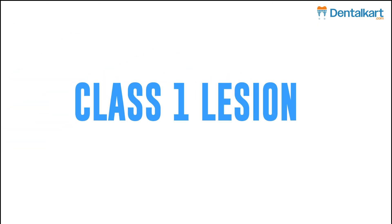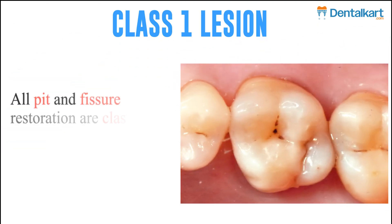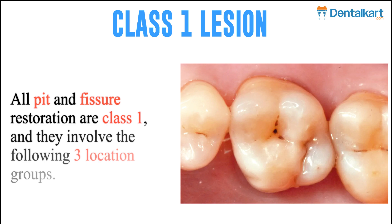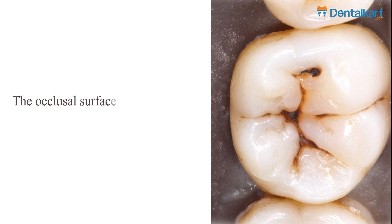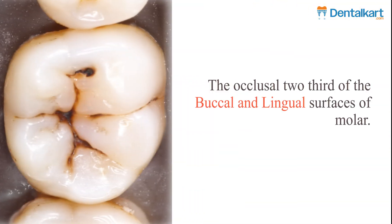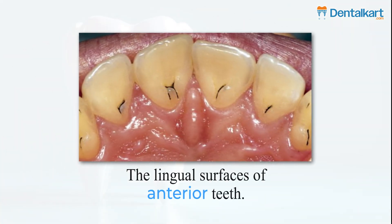Class 1 lesion: All pit and fissure restorations are Class 1, and they involve the following three location groups: the occlusal surfaces of the molar and premolar; the occlusal two-thirds of the buccal and lingual surfaces of molar; and the lingual surfaces of anterior teeth.